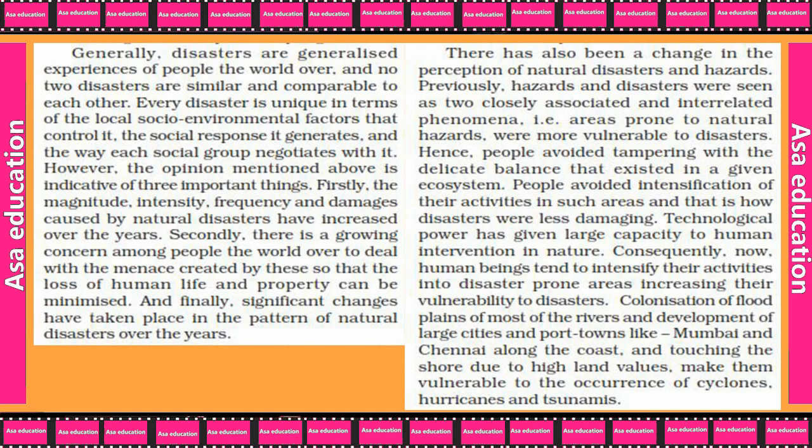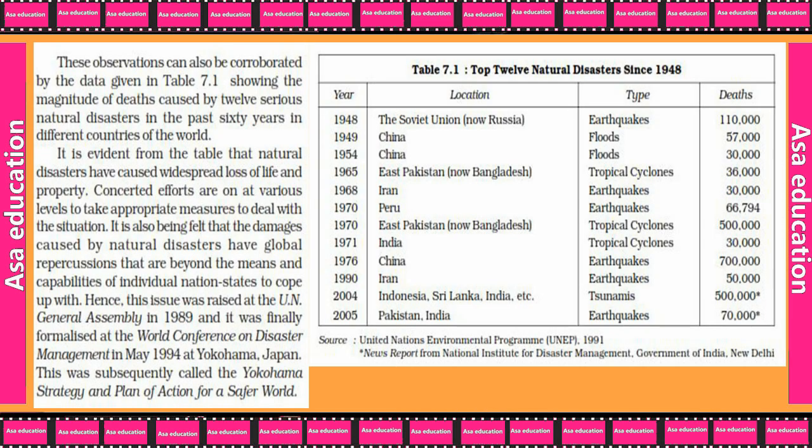The colonization of floodplains of most rivers and development of large cities and port towns like Mumbai along the coast, due to high land values, makes them vulnerable to the occurrence of cyclones, hurricanes and tsunamis. These observations can be corroborated by the data in Table 7.1, showing the magnitude of deaths caused by 12 serious natural disasters in the past 60 years in different countries. It is evident that natural disasters have caused widespread loss of life and property.